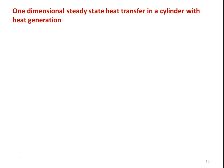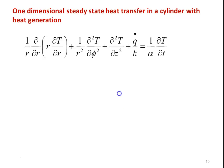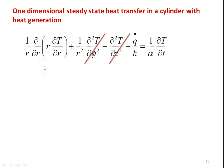First, we will take up one-dimensional steady-state heat transfer in a cylinder with heat generation. This is the general heat conduction equation for a cylindrical coordinate system, and we will simplify this equation for the present situation. Since it is one-dimensional, we consider the heat transfer only in the radial direction, so the heat transfer in the azimuthal direction and the axial direction are dropped.